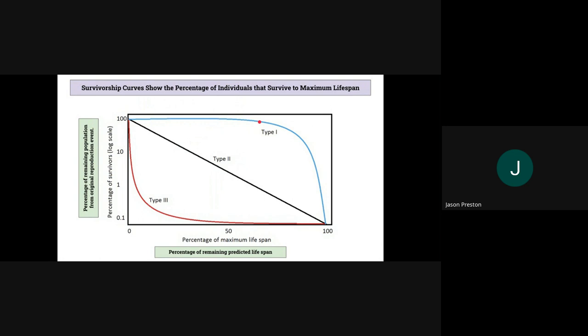And this is what we usually see in humans, right? We have tragic accidents and illnesses early on take out a small percentage, but overall most humans will make it all the way to the end of their lifespan and then they all die eventually. Now Type 3 is very different.